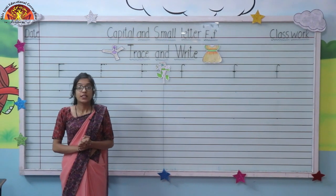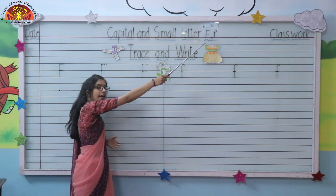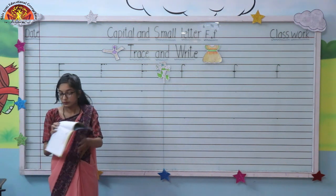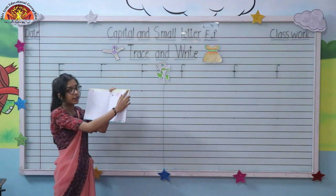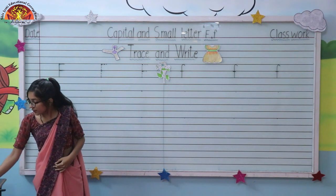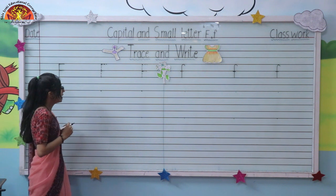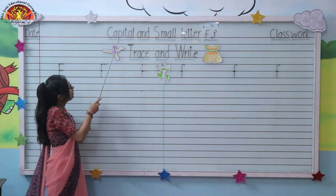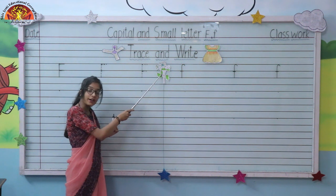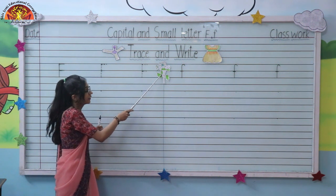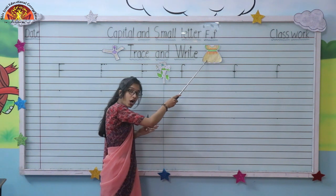Now kids, we will trace and write capital and small letter F. So take out your Grafalco again and open page number 17. Parents are requested to mention date and classwork here. Let's start — first let's see the images: F for fan, F for flower. Now tell me what is this? This is F for frock.